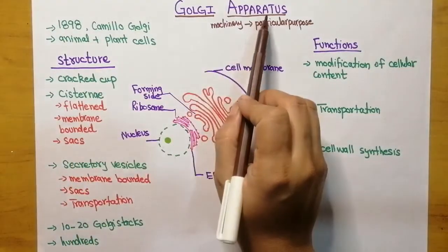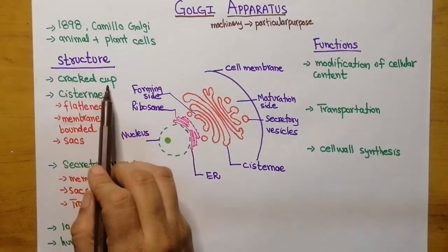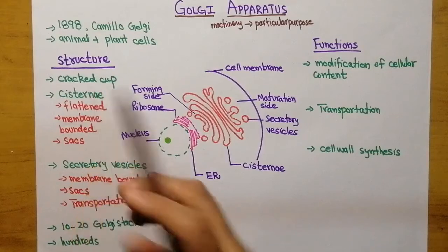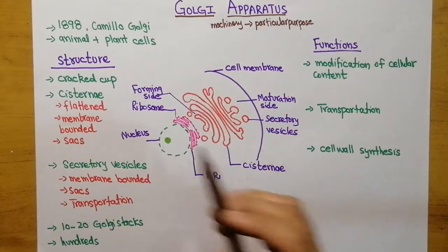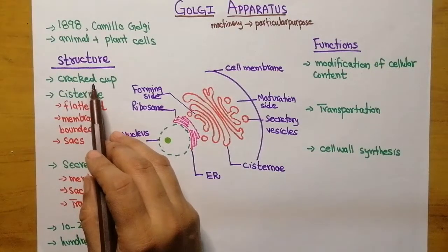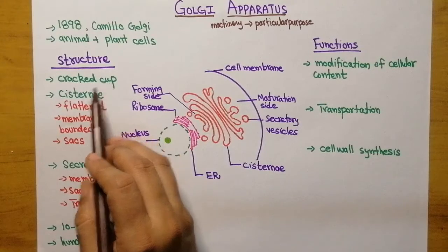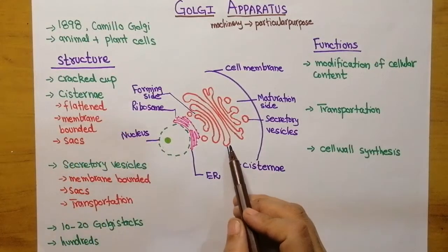If we talk about the structure of the Golgi apparatus under the microscope, it looks like a cracked cup. From that broken cup, small vesicles — small bags or small pouches — are generating. In detail, this cracked cup is made up of cisternae.